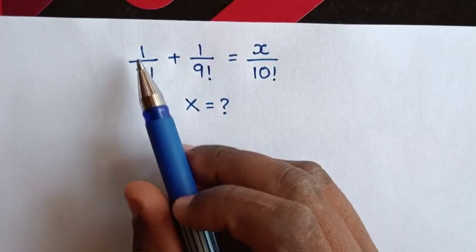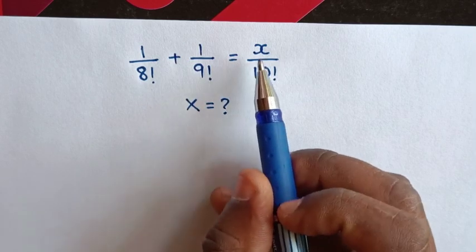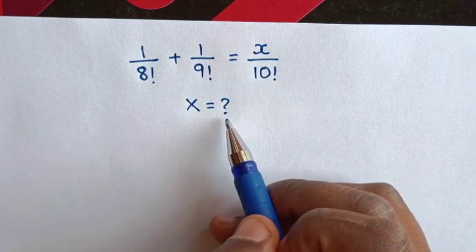Hello, how to solve 1 over 8 factorial plus 1 over 9 factorial is equal to x over 10 factorial to find the value of x.